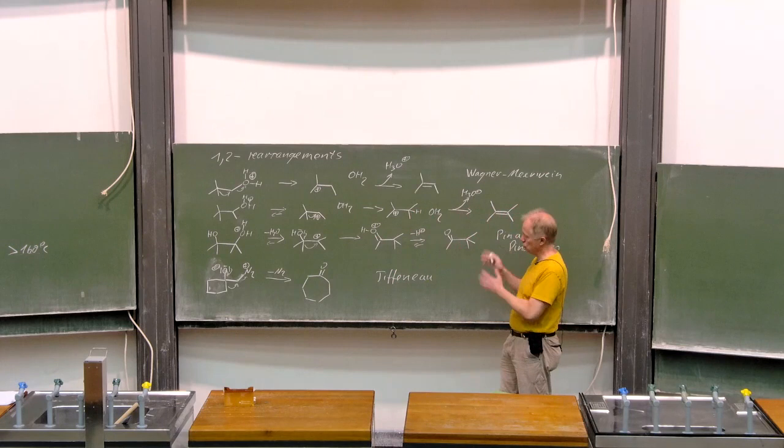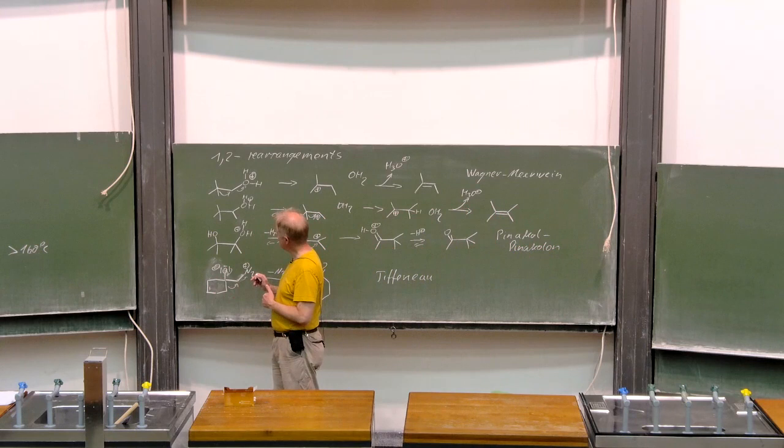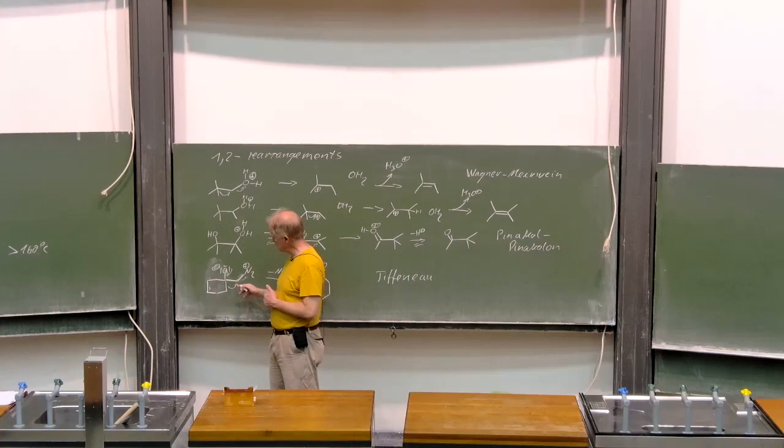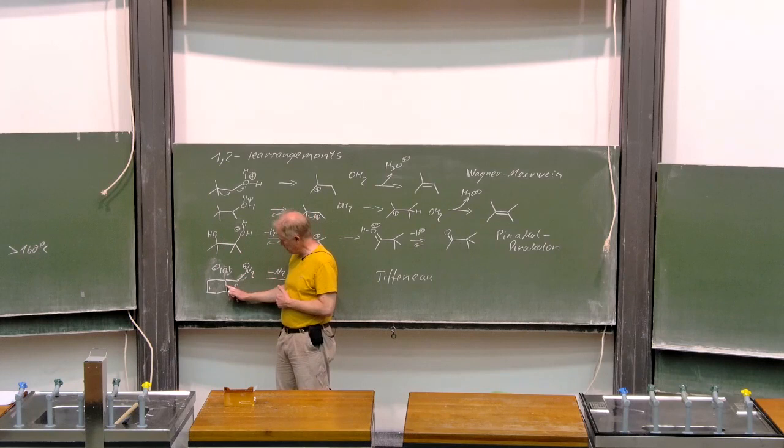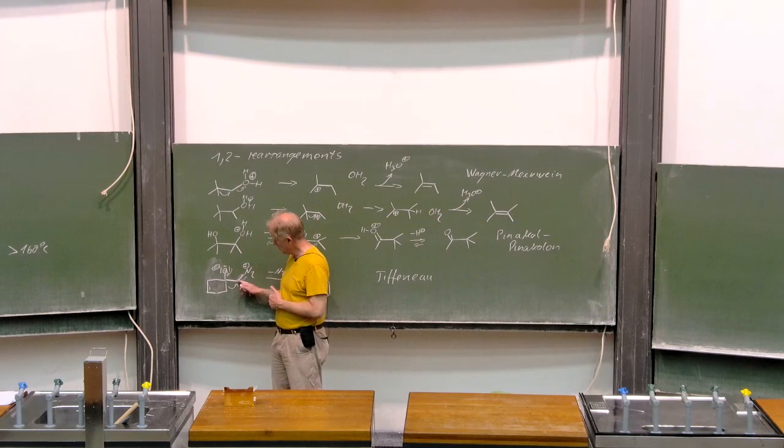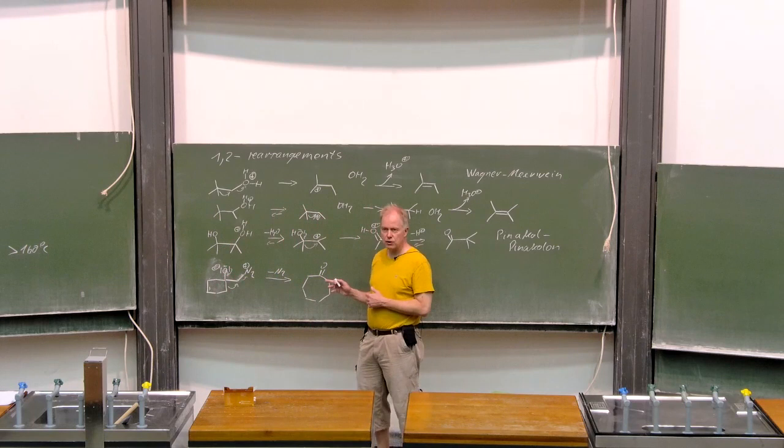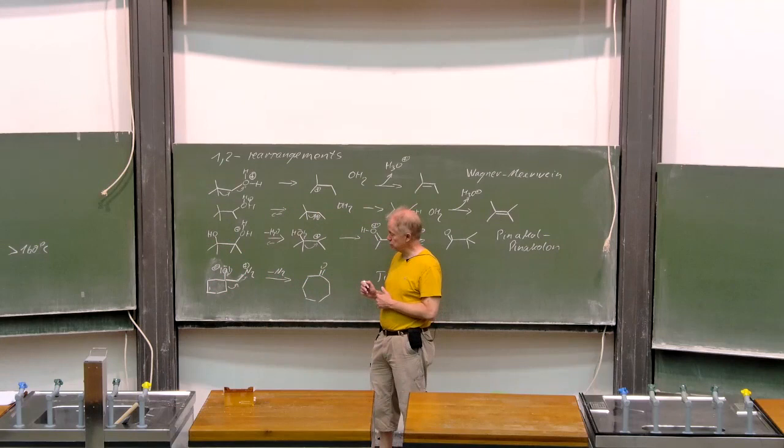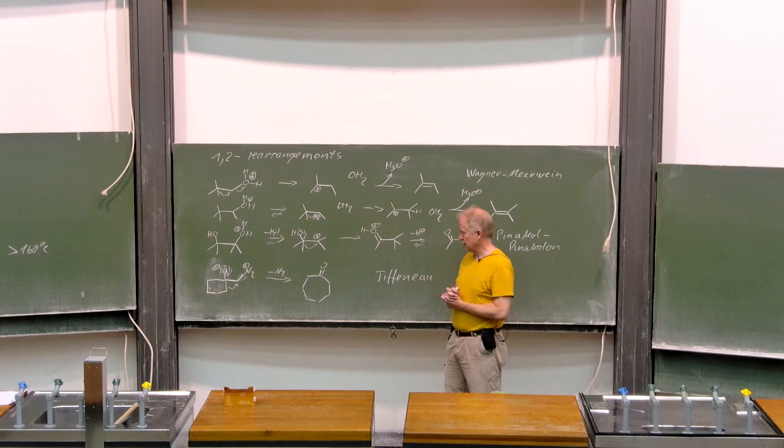Now, please compare this situation with the Wagner-Meerwein rearrangement and the Pinacol-Pinacolone rearrangement. Here, we have as a leaving group nitrogen. If nitrogen leaves, then this alkyl group from the cyclohexane moiety will migrate while the carbonyl is formed. We end up with this cyclohexane moiety. As the final product, we have a ring enlargement reaction from the six-membered ring to the seven-membered ring. And you should know this type of rearrangement as the Tiffeneau rearrangement.